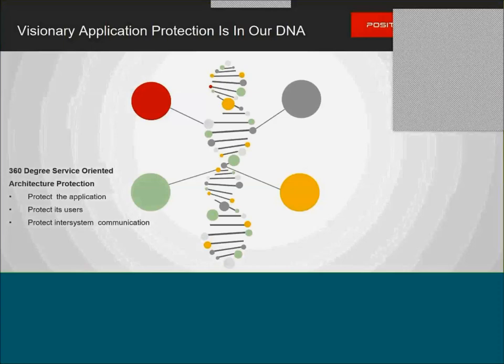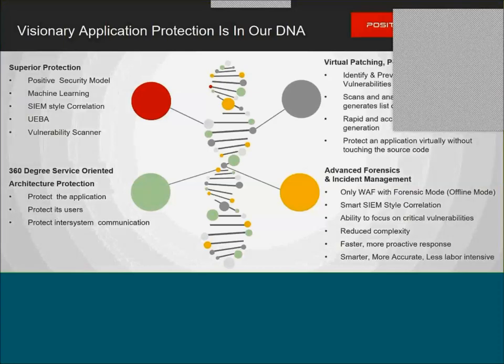Another key differentiator is our capability to detect vulnerabilities and apply a virtual patch to them. A lot of current WAFs find a vulnerability, raise an alert through a SIM solution, and then the DevOps or coding team analyzes and writes repair code to fix it. We do that in near real time — we can look at a vulnerability, test it, and fix it with a virtual patch, allowing DevOps teams to fix it properly in their own time.